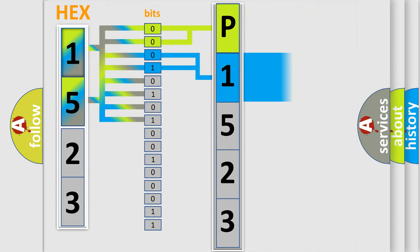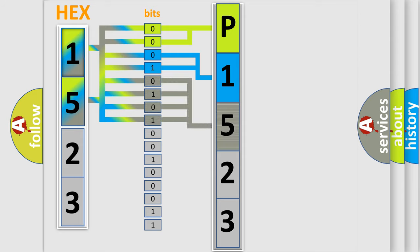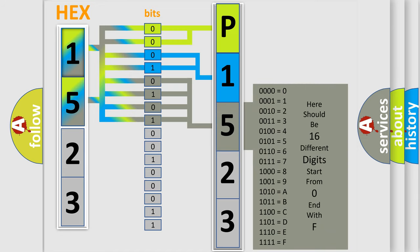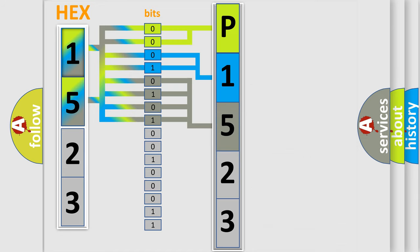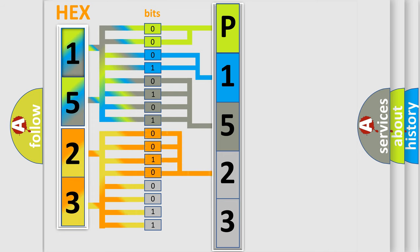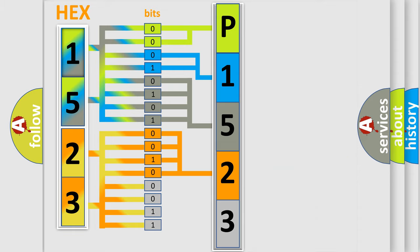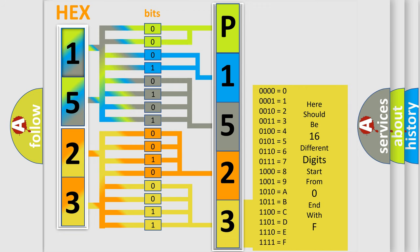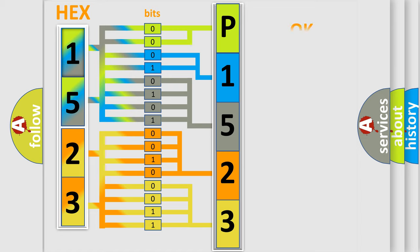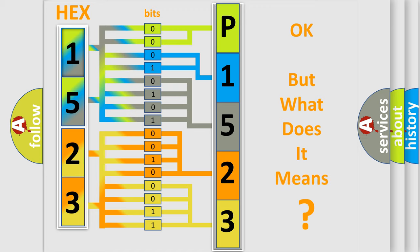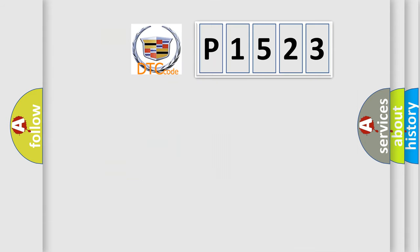The next two bits determine the second character. The last bits of the first byte define the third character of the code. The second byte is composed of a combination of eight bits. The first four bits determine the fourth character of the code, and the combination of the last four bits defines the fifth character. A single byte conceals 256 possible combinations. We now know in what way the diagnostic tool translates the received information into a more comprehensible format. The number itself does not make sense to us if we cannot assign information about what it actually expresses.